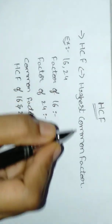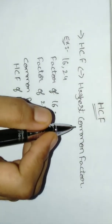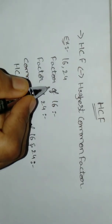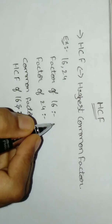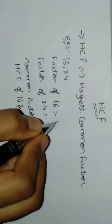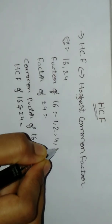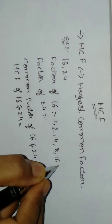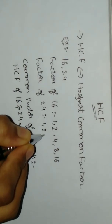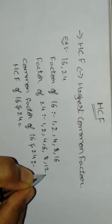HCF is the highest common factor. For example, 16 and 24. Factors of 16: First 1 table, 2 table gives 16, 4 and 8 tables give 16, and 16 table also. Now we have 24 factors: 1 table, 2 table, 4 table, 6 table, 8, 12, and 24 table also.